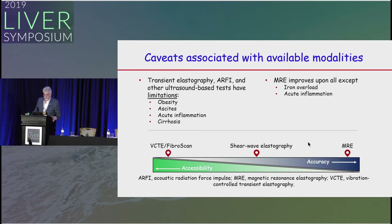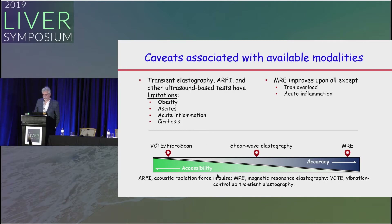Current modalities include transient elastography and acoustic radiation force impulse, though they have limitations in the setting of obesity, ascites, and acute inflammation, with a wide range in availability and accuracy. MRE is highly accurate and a great modality. Many studies are now using MRE in lieu of liver biopsy.